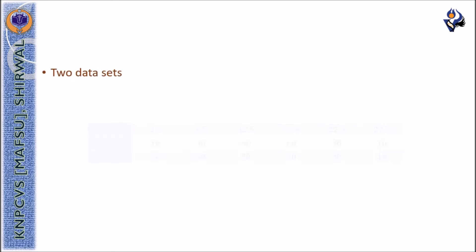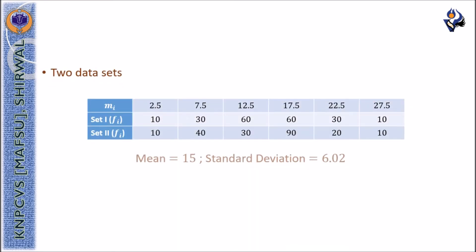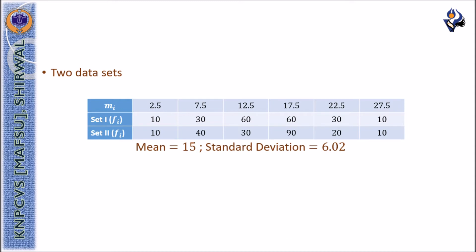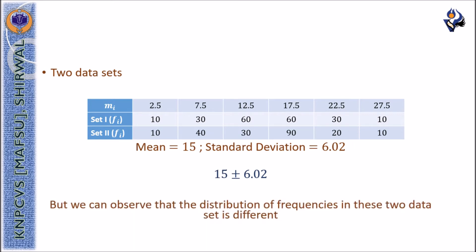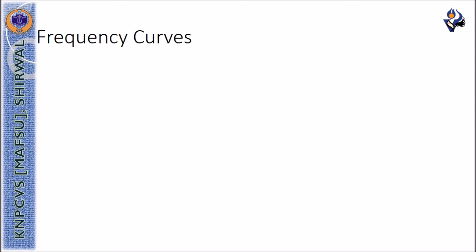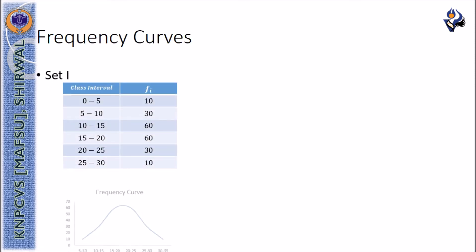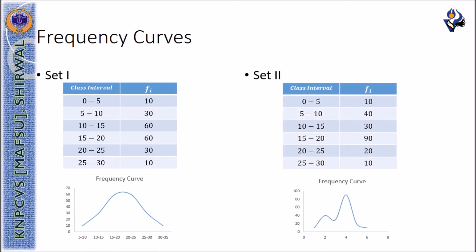For example, if there are two data sets and we calculate the arithmetic mean and standard deviation, both data sets will have 15 plus or minus 6.02 as their arithmetic mean and standard deviation. But the distribution of frequencies in these two data sets is different from one another. If we plot the frequency curves, the shapes of the curves for these two data sets will be different from one another.